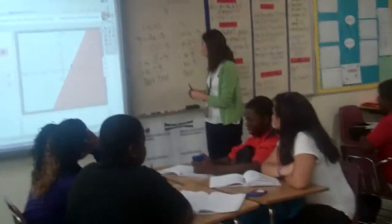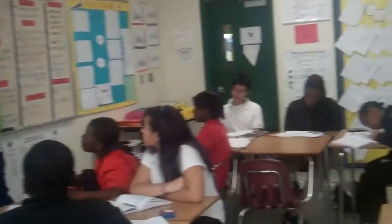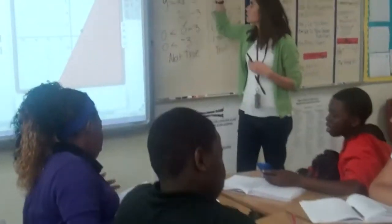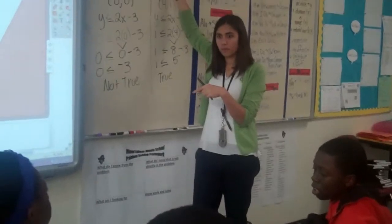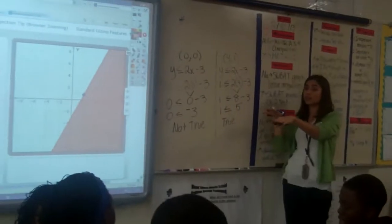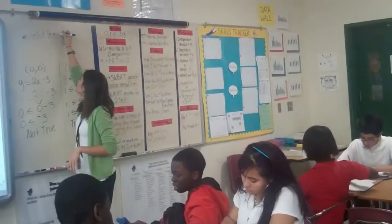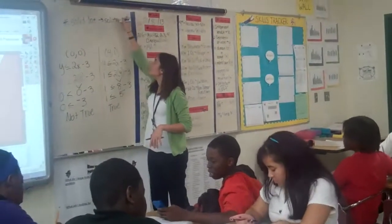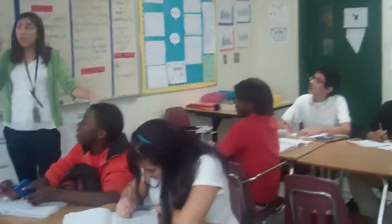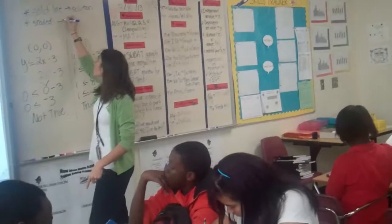What would we say is the final rule, if you had to come up with something about ordered pairs and points? It doesn't have to be perfect. Alicia: if an ordered pair is on a solid line, it's part of the solution. And the shaded area — all the x's and y's in the shaded area — are part of the solution. I'll write it: if it's a solid line, it's part of the solution. Shaded area is also part of the solution.